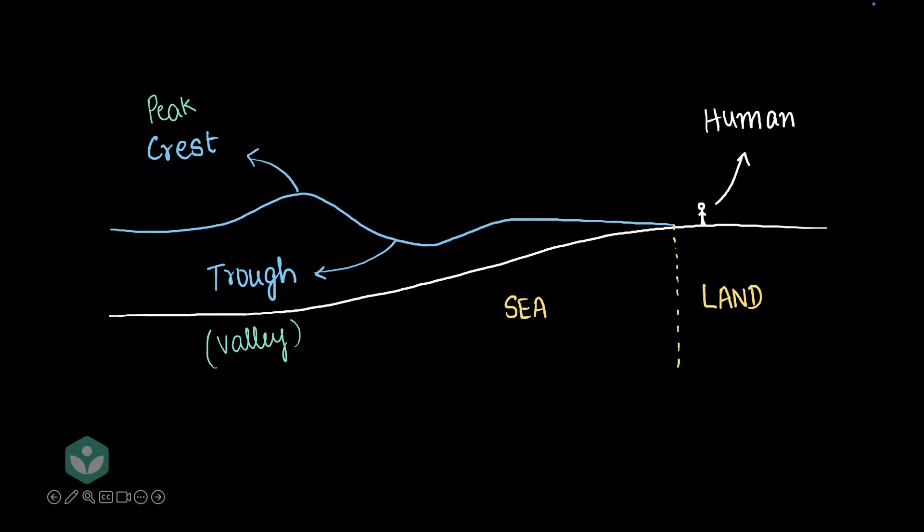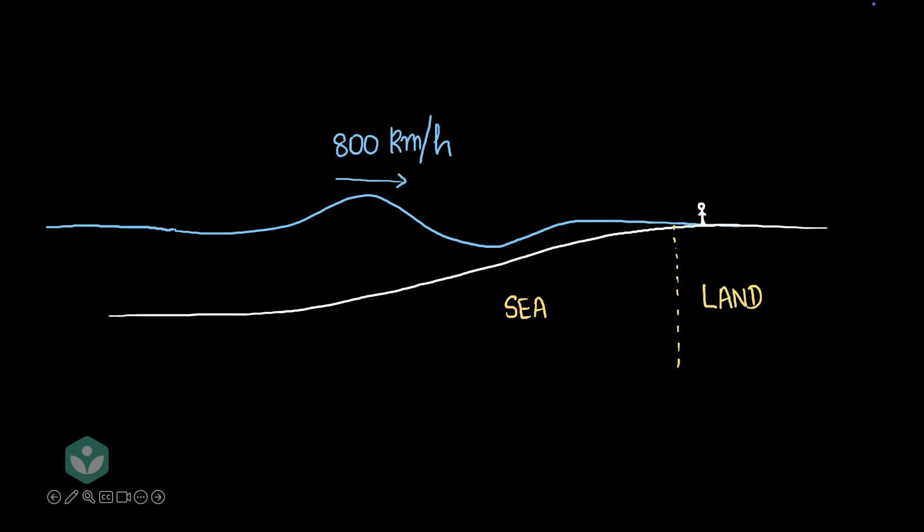Now this wave is moving steadily towards land, it's moving at a very high speed. 800 kilometers per hour is an approximate speed of a tsunami wave. It's so fast that it's very hard to get alerted about this wave. And moreover, this wave is pretty small when it's away from the shoreline.